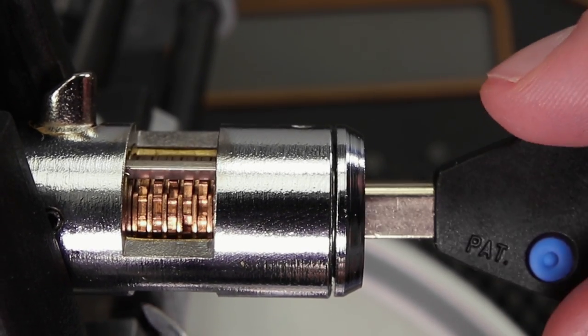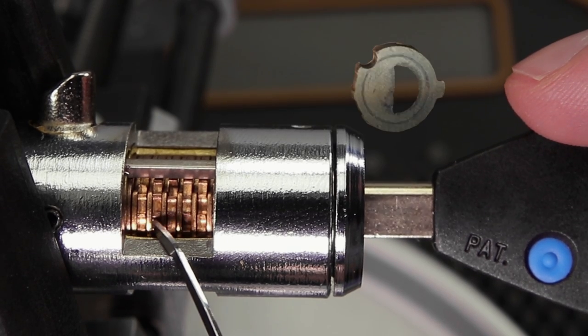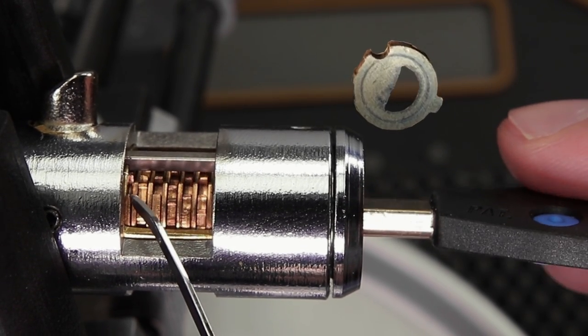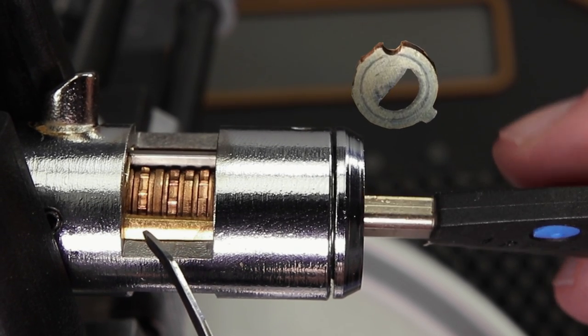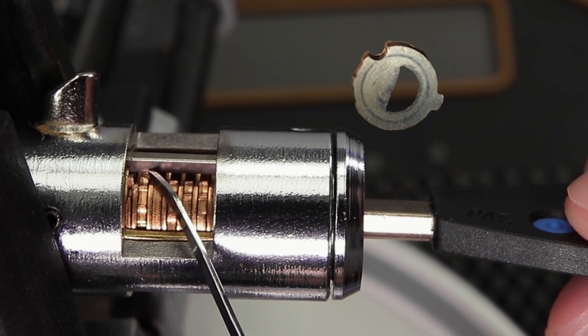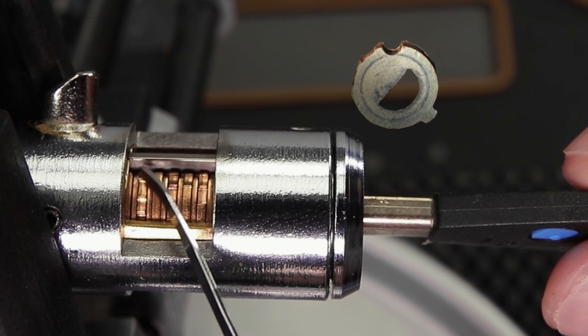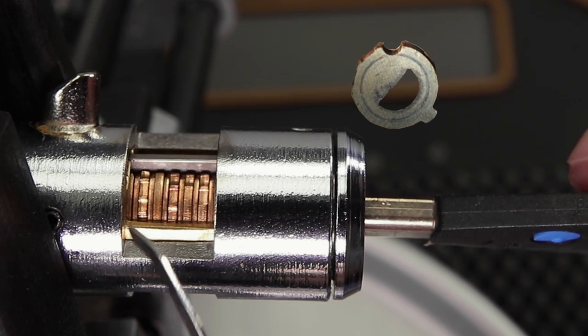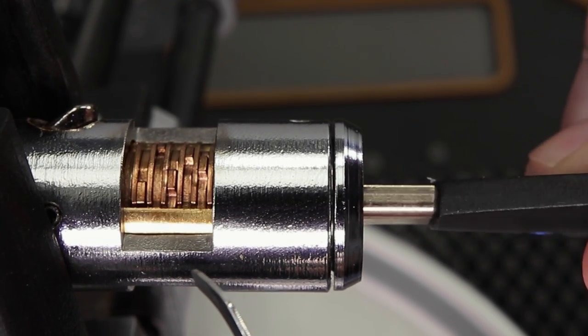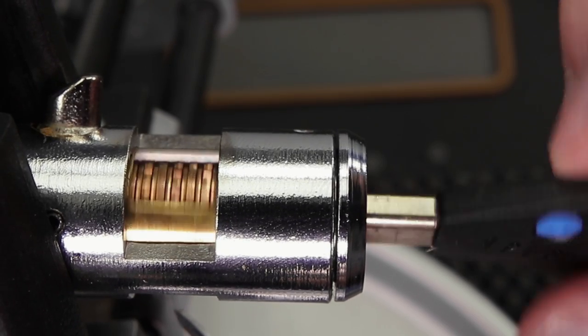I'm going to demonstrate that for you one more time. Watch as these discs start to align. They're all starting to align right under the sidebar. You see the sidebar fall in. Let's do that one more time. You can see the sidebar starting to fall in. Now nothing obstructs the lock from turning over. You're able to open up your lock and that is how a disc detainer lock works.